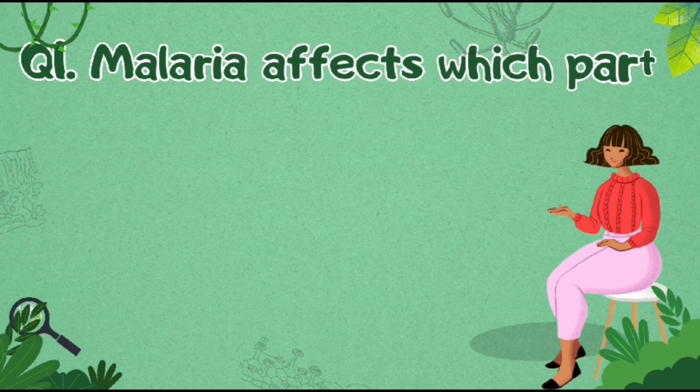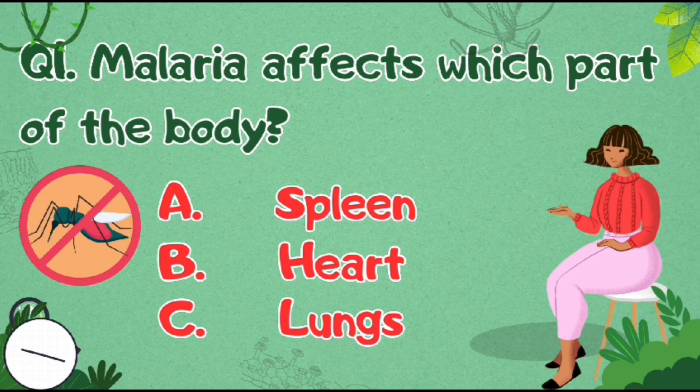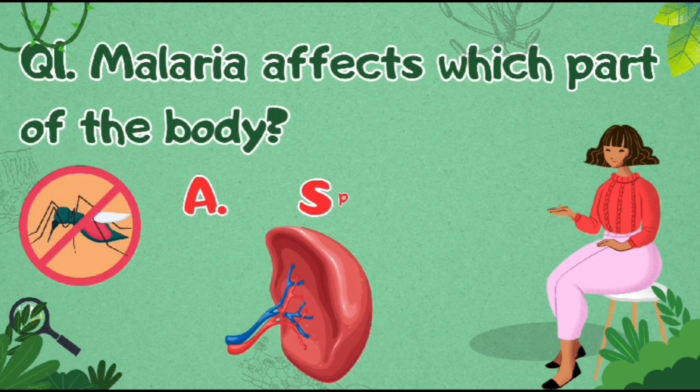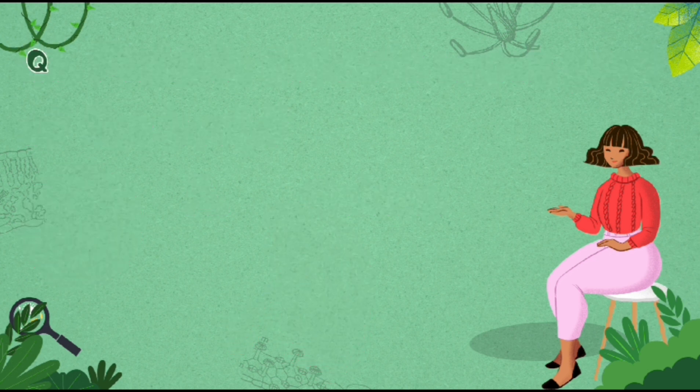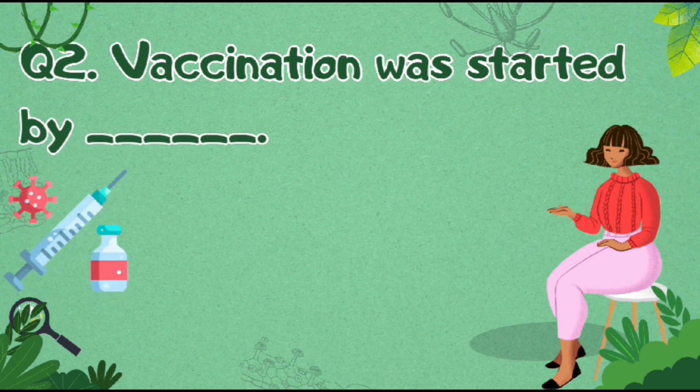Malaria affects which part of the body? Options are A: spleen, B: heart, or C: lungs. The right answer is option A, spleen. Vaccination was started by...